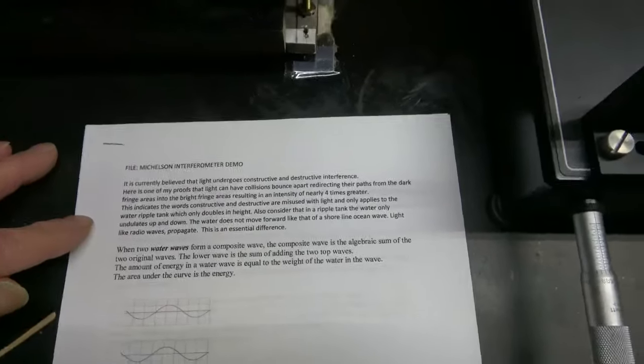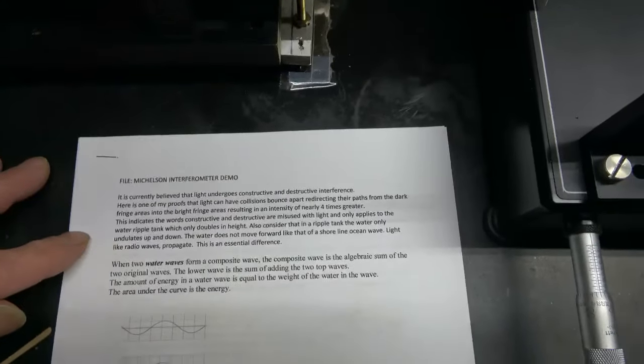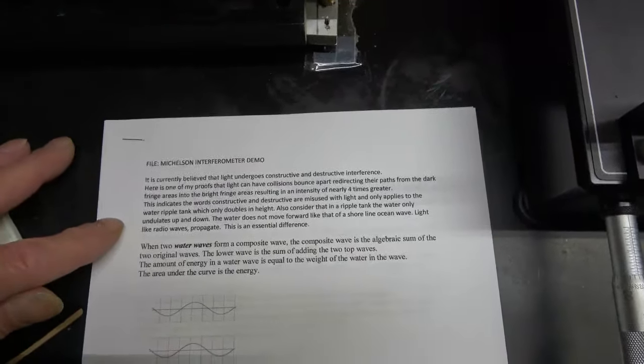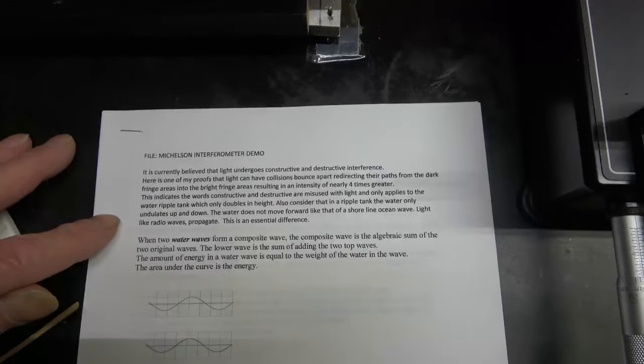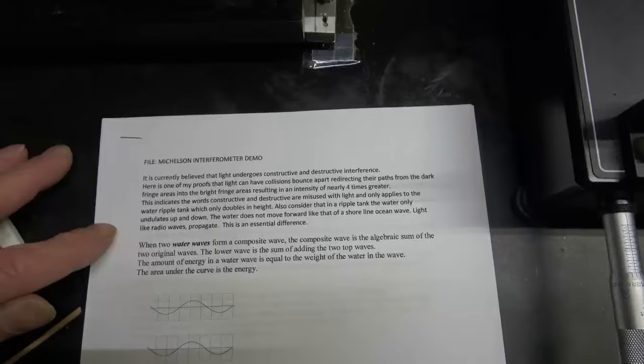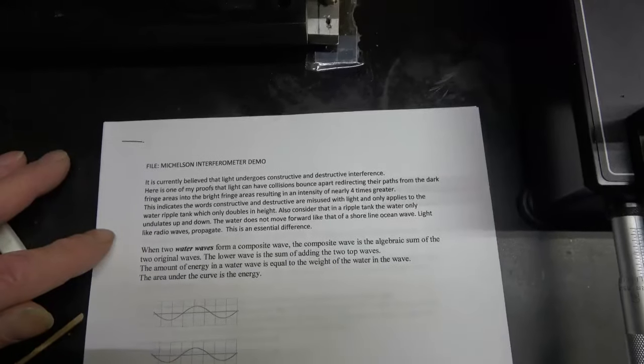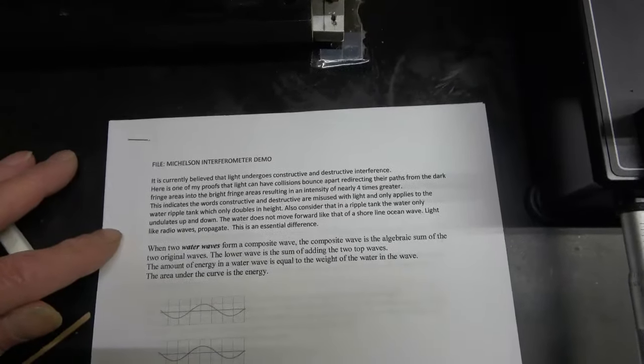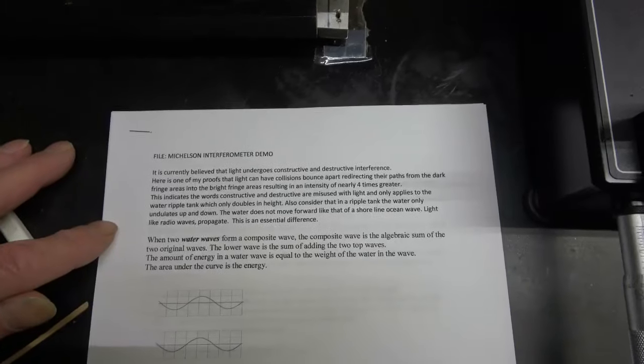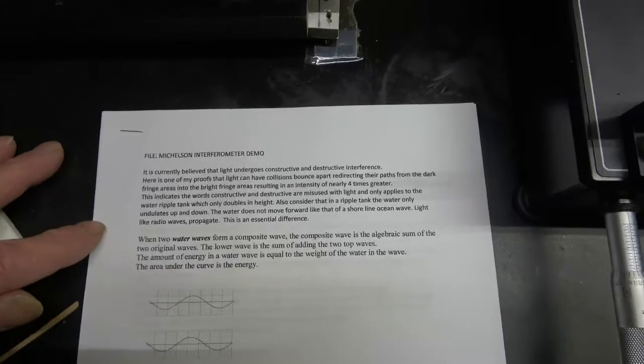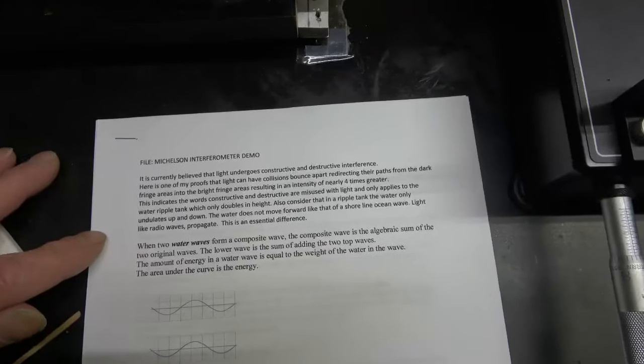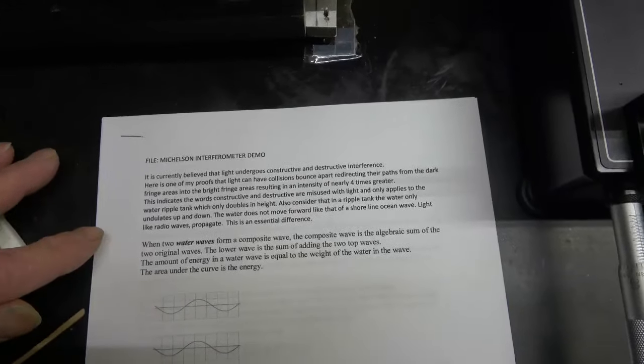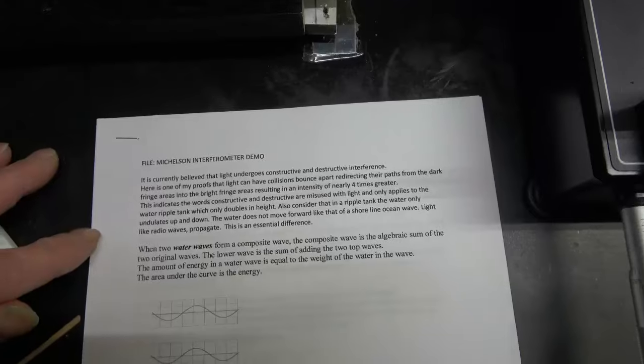This indicates the words constructive and destructive are misused with light and only apply to water ripple tanks, which only double in height. Also consider that in a ripple tank, the water only undulates up and down. The water does not move forward like that of a shoreline ocean wave. Light, like radio waves, propagates. This is an essential difference.